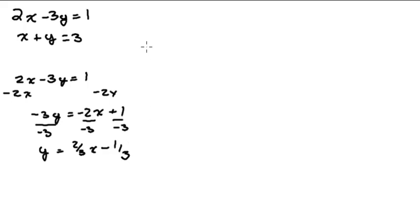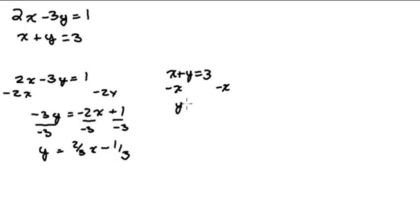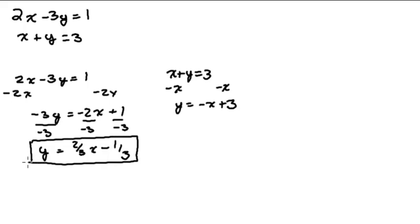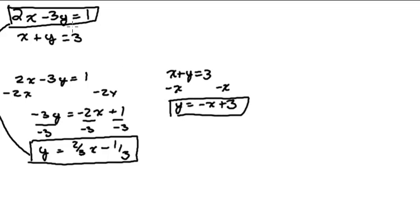Now for the second line, x plus y equals 3, I'll solve it for y. Subtracting x from both sides, I get y equals negative x plus 3. Now I want to graph both of these lines — the one from the first equation and the one from the second equation — on the same set of axes.